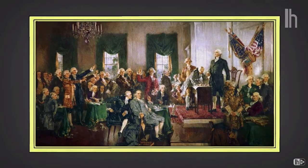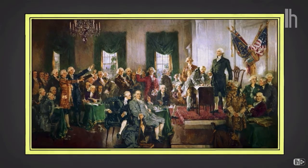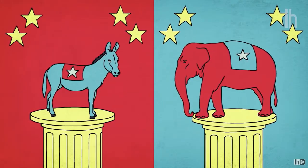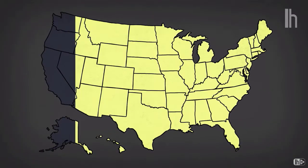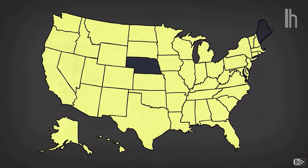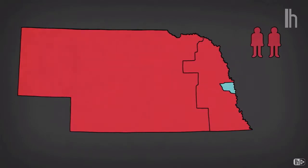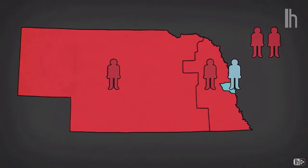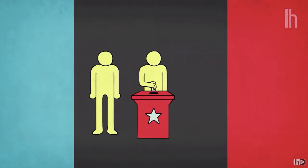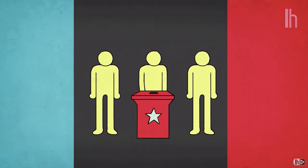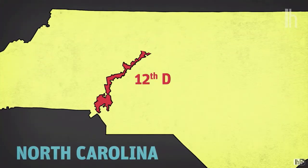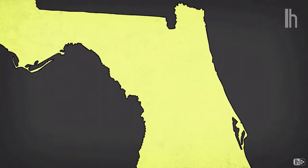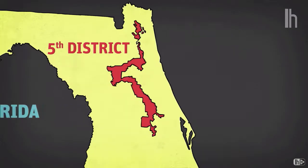The winner-take-all system was not originally envisioned by the founders — it was a change in state law made by party leaders to maximize support for their preferred candidate. Once one state went this route, the rest quickly followed, all except Nebraska and Maine. In those states, the state winner gets two electors and the winner of each congressional district receives one elector, allowing electors to be awarded to more than one candidate.